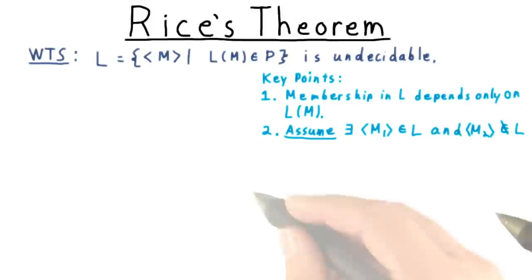Recall that in all our reductions, we created a machine N that either accepts nothing, or else it has some other behavior, depending on the behavior of the input machine M. Similarly, there are two cases for Rice's theorem.